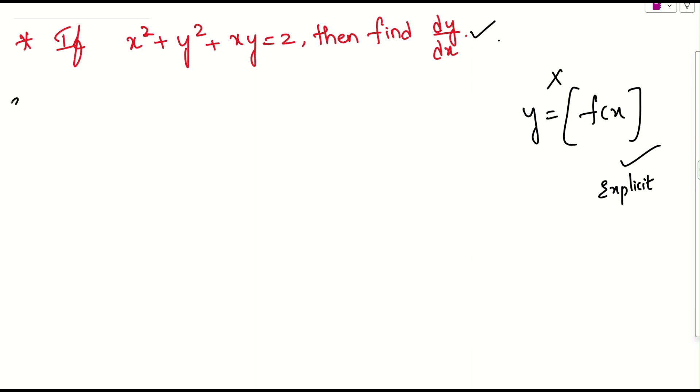How to solve? Simply, let us consider what is given. This is x square plus y square plus xy equals 2. Here, x is one variable and y is one variable. If you want to differentiate this, try to differentiate this function with respect to x on both the sides.